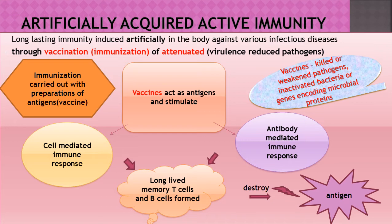These attenuated pathogens are used in vaccines. A vaccine can contain killed or weakened pathogens — live pathogens which have been weakened so they cannot cause disease but can stimulate an immune response as if the person has already had the disease. Vaccines can also contain weakened pathogens, inactivated bacteria, or genes encoding microbial proteins — specific sequences encoding the building blocks of proteins. A vaccine does not cause disease but acts as an antigen and stimulates an immune response.